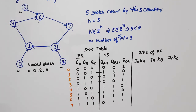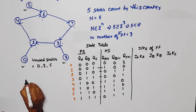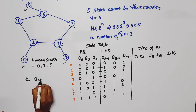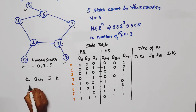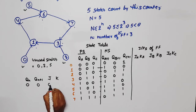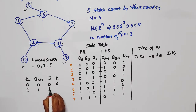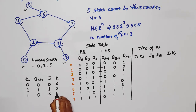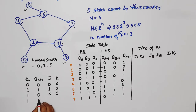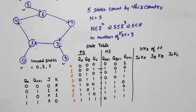So this is the present state and next state table. Now, based on this, we write the JK values using the excitation table of the JK flip-flop. The excitation table is: if present state Qn and next state Qn+1 are both 0, J=0 and K=don't care. If present is 0 and next is 1, J=1 and K=don't care. If present is 1 and next is 0, J=don't care and K=1. If present is 1 and next is 1, J=don't care and K=0.